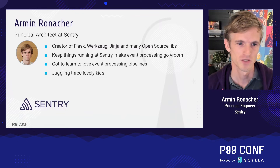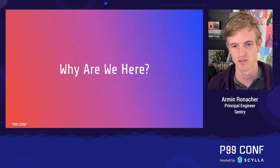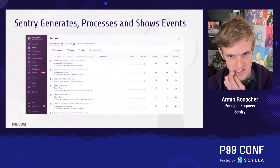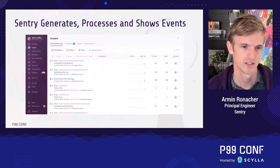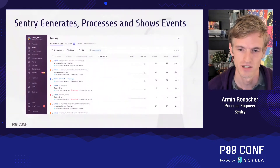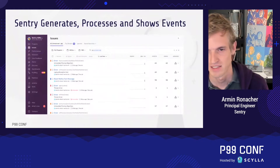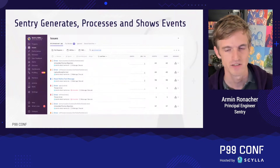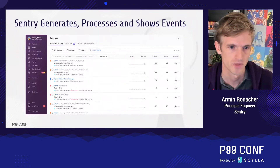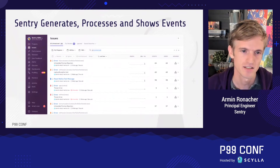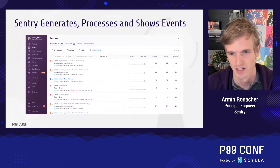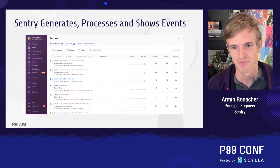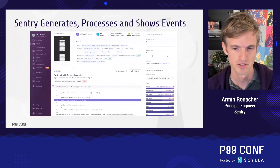I don't want to talk too much about the product but I want to give you a very basic overview of what it is that we're doing so you have an idea of the context of this presentation. If you go into Sentry, which is a crash reporting and application monitoring product, you will find this view — basically a list of the error events or transaction events that are coming in, grouped together by commonality. Every single crash report that comes in will end up in a group, and this means we have to do a whole bunch of processing as events come in.